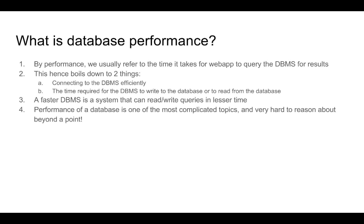As you can see from the statement we used to describe performance — the time it takes for the web app to query the DBMS for results — it is obvious that there are two factors that affect performance. One is connecting to the DBMS efficiently, and the second is the time the DBMS itself takes to process the query. The performance of a database is one of the most complicated topics in computer science and it is extremely hard to reason about beyond a point. It is important to understand the first principles that affect performance, but it is very hard to compare the performance of two databases in a general way.